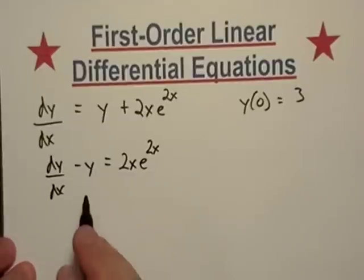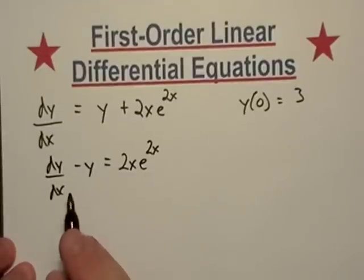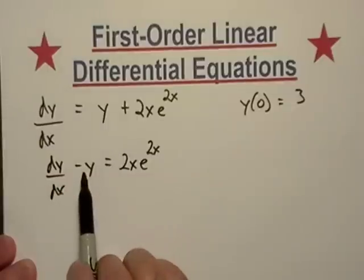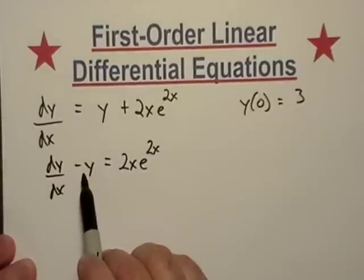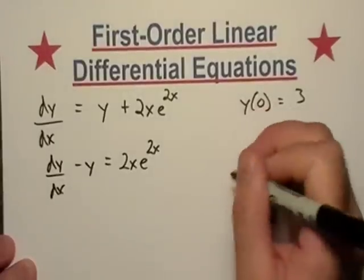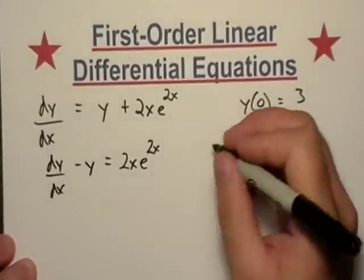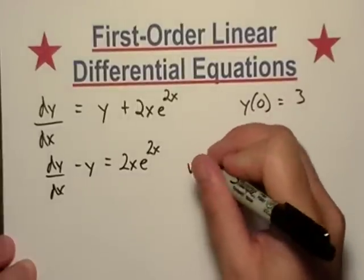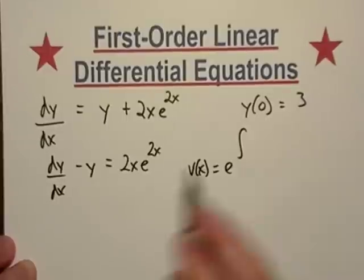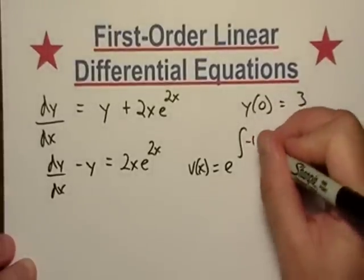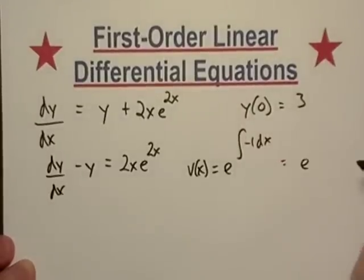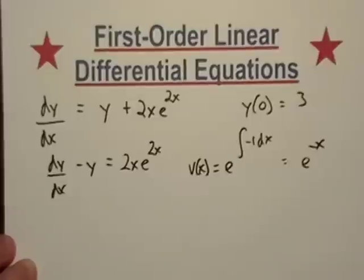All right, great. So we did determine that just based on the regular form, that our p of x, that part is just going to be negative 1, and here's our q of x right here. So let's just go and get our integrating factor. And remember the integrating factor is a function of x, and that's just e raised to the integral of p of x, which is just negative 1 with respect to x. And that's just e to the negative x.